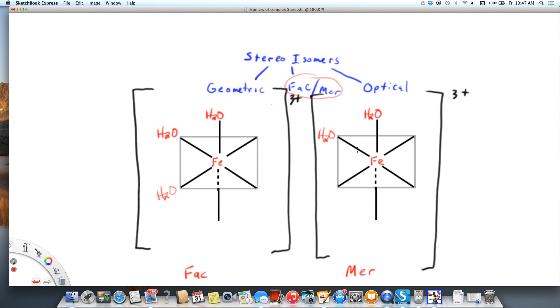In this case, I need two water molecules that are trans or across from each other. So I could put a water molecule down here, it would be across from this one, and my mer, my belt, would be right there. Or I could put it right here, across from this water molecule, and you can see now that I have my meridian going like that.